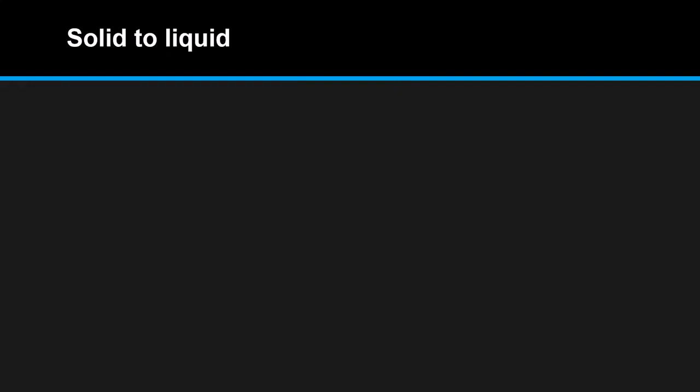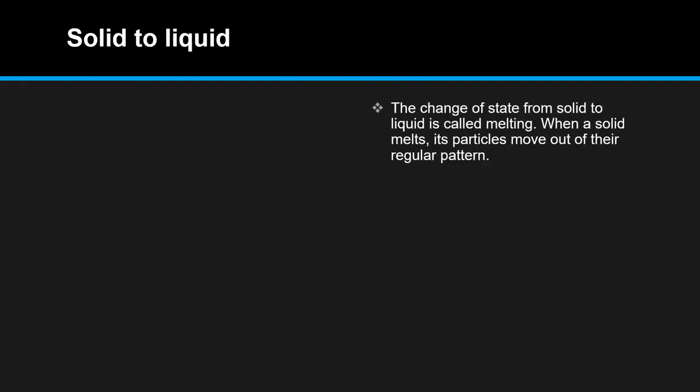First, let's start with solid to liquid. The change of state from solid to liquid is called melting. When a solid melts, its particles move out of their regular pattern. In a solid, the particles are in a fixed, regular position. But when it's melting, the pattern breaks — there is no regular pattern anymore, it becomes an irregular pattern.